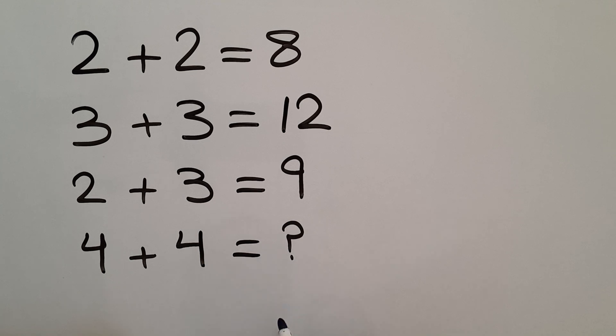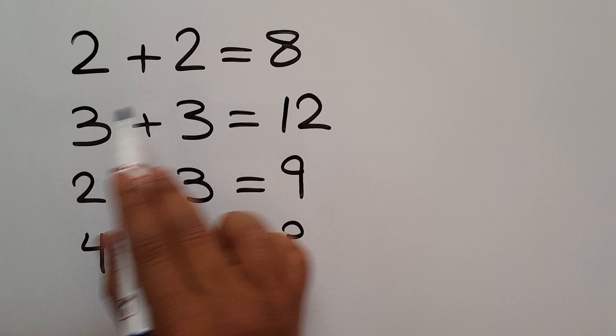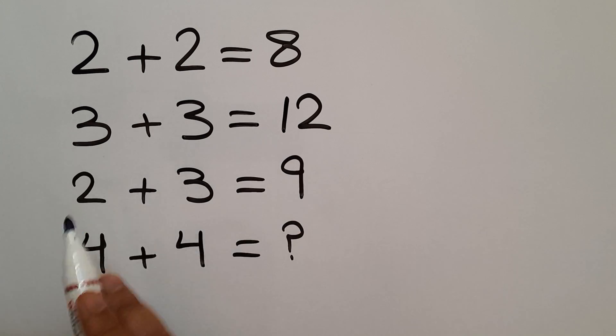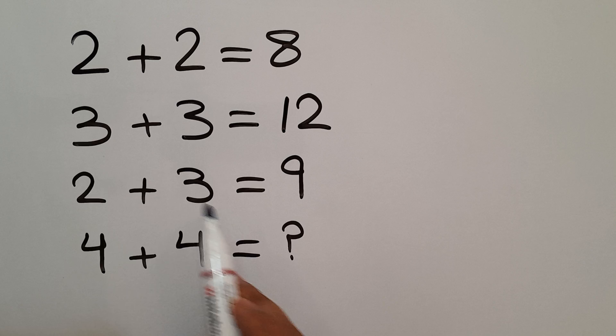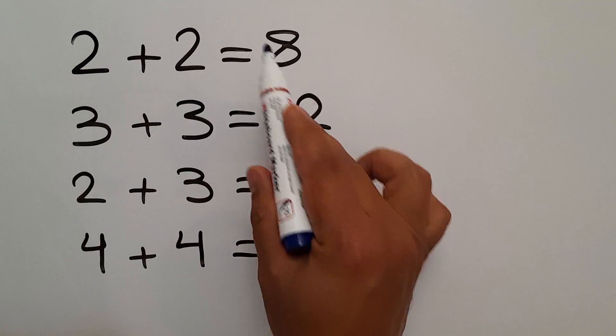Are you ready to solve? Let's go. In each line we have three numbers, and we need to find the relationship between these numbers - the left hand side numbers and the right hand side number.